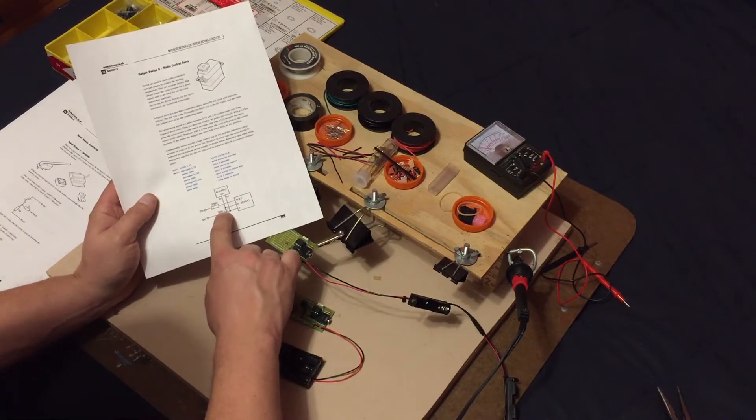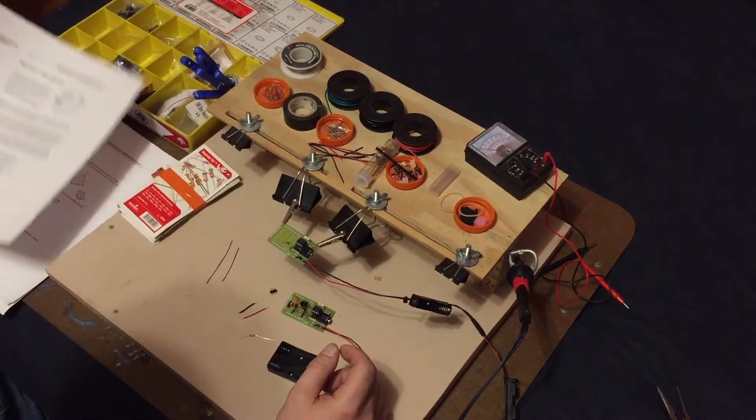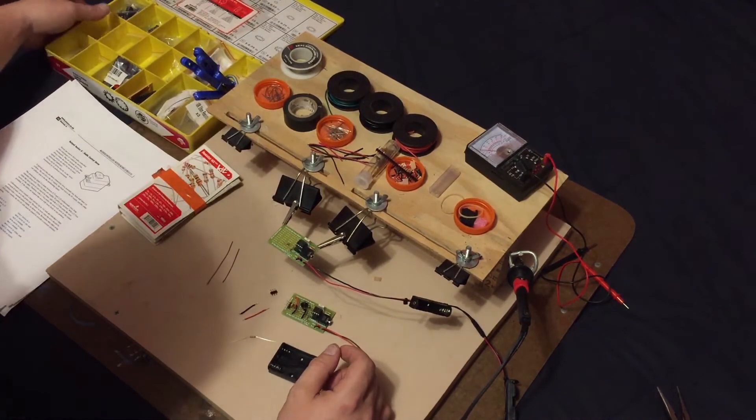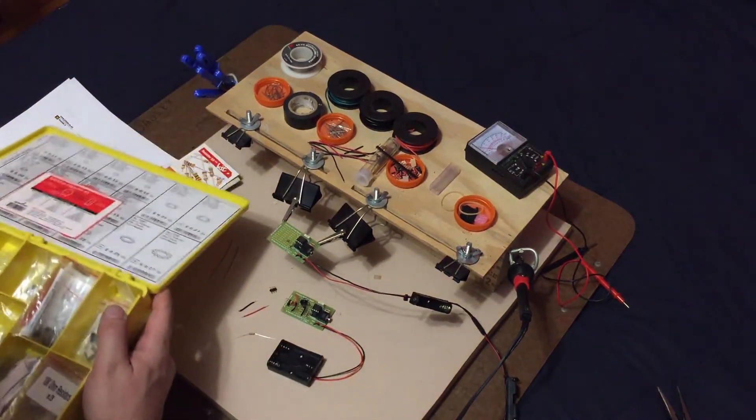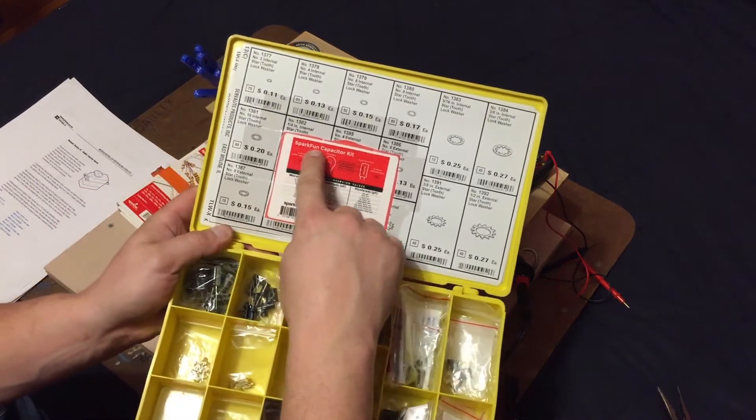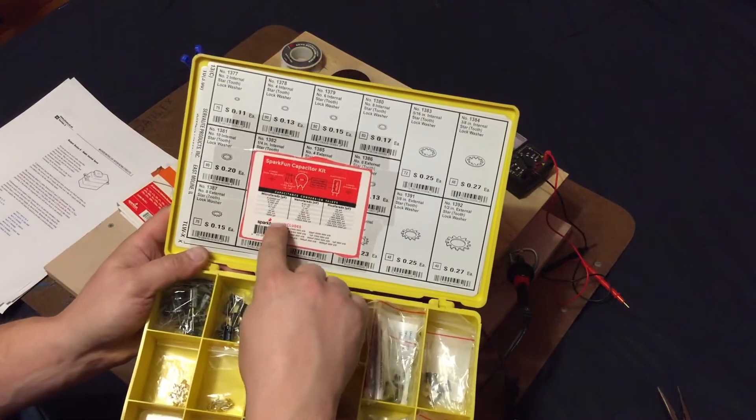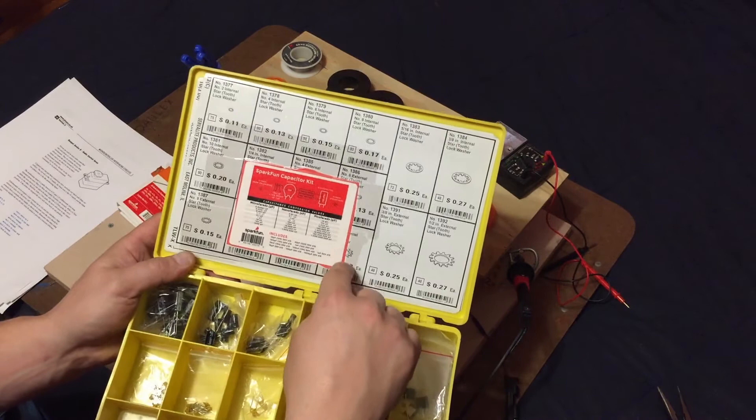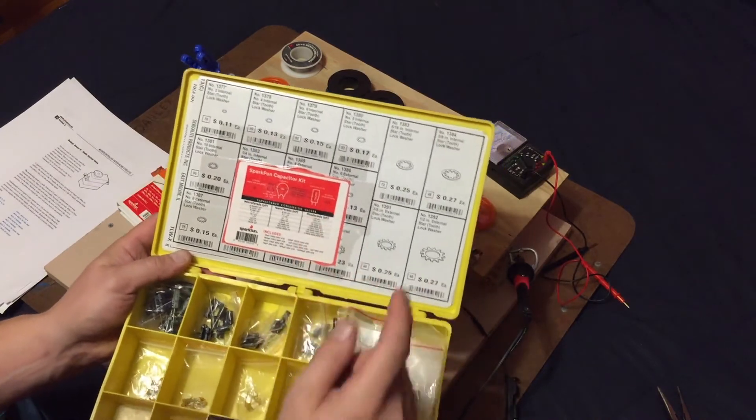Now this just says 100N and it stands for nanofarad. And in my spares box here, this old little bits container, I have my SparkFun capacitor kit. This was actually part of a box that I had to cut off here.